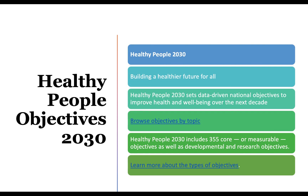Let's talk about Healthy People Objectives 2030. They were released a little late due to the pandemic. For the last 40 years, every 10 years Healthy People is released — now in its fourth iteration. The four overarching goals are: to attain high-quality, longer lives free of preventable disease, disability, injury, and premature death; achieve health equity; eliminate disparities; and improve the health of all groups. The central theme for 2030 is to build a healthier future for all. There are 355 core measurable objectives under the 2030 objectives, as well as developmental and research objectives — there's a link in the PowerPoint.